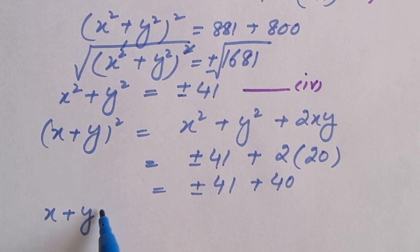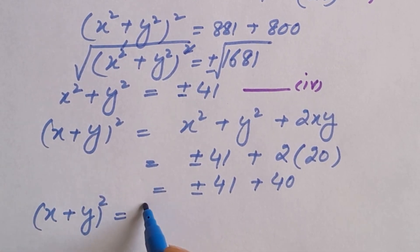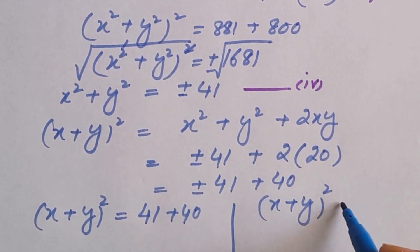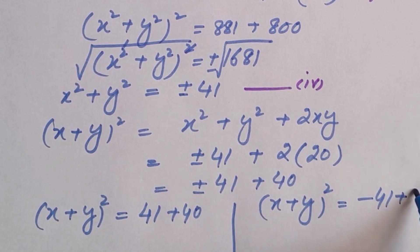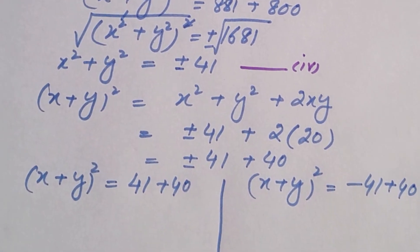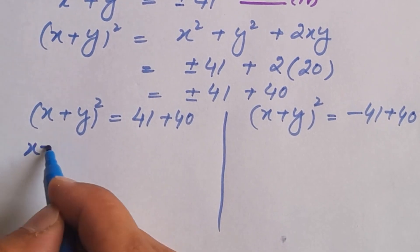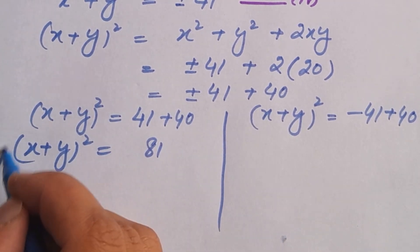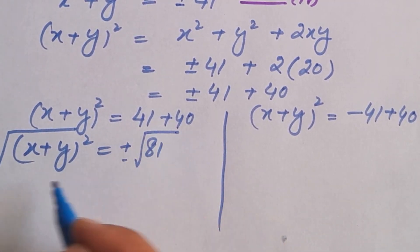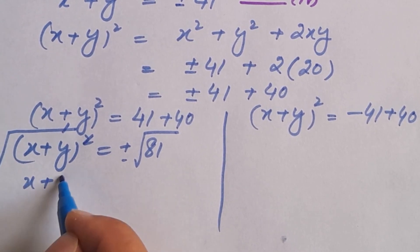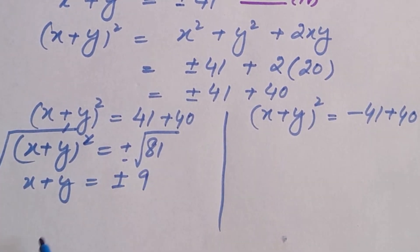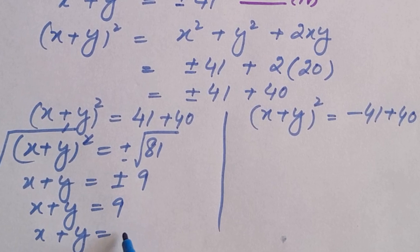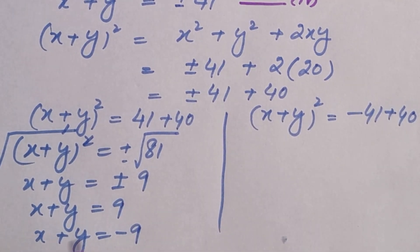So 2 times 20 is 40. This means we get two values of (x plus y) squared. Case 1: positive 41 plus 40 equals 81. Taking the square root on both sides, x plus y is equal to plus or minus square root of 81, which is 9. So from case 1, we get two values of x plus y: positive 9 and negative 9.